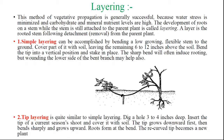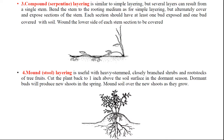The second method is layering, and this is also one of the important methods of plant propagation. It is generally successful because water stress is minimized and carbohydrate and mineral nutrient levels are high. The development of roots on a stem while the stem is still attached to the parent plant is called layering. When roots are formed, we detach the branch from the mother plant and develop it as a new plant. There are different types: simple layering, tip layering, compound or serpentine layering, mound layering, and air layering or gutty.